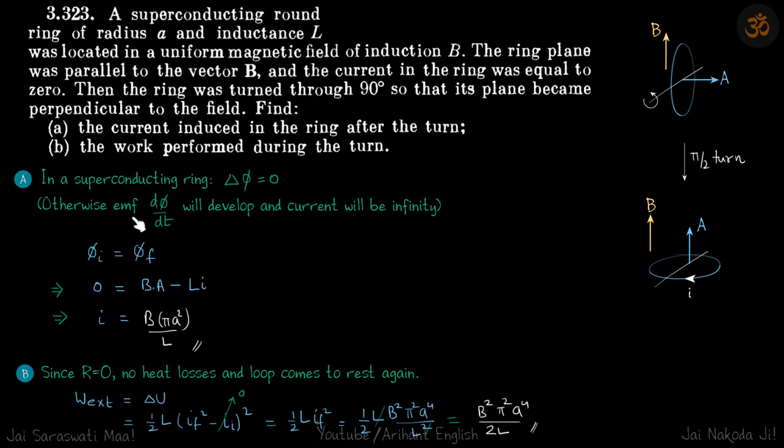the current is EMF divided by resistance. So that will become infinity, which is not possible. Therefore change in flux in a superconducting ring is zero. So we are going to use this for our first part to calculate the current.